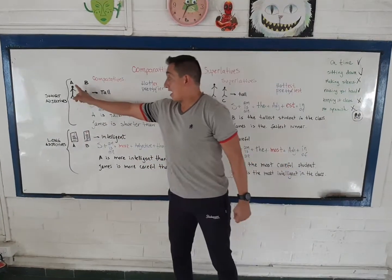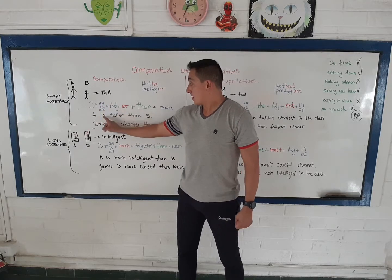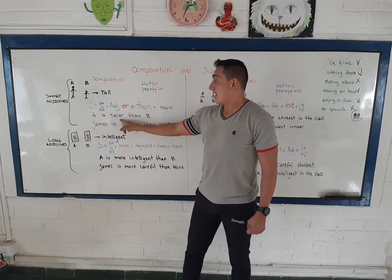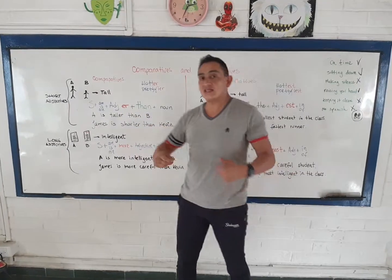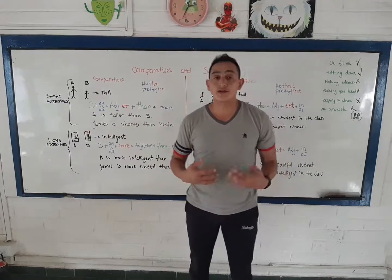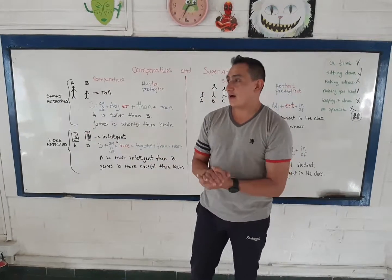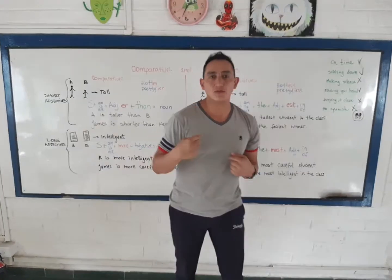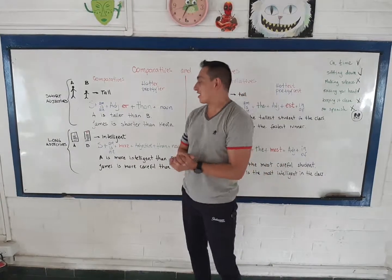So, A is taller than B. James is shorter than Kevin. I am smarter than my brother — I am just kidding! I am smarter than my brother. Alright, don't forget that.